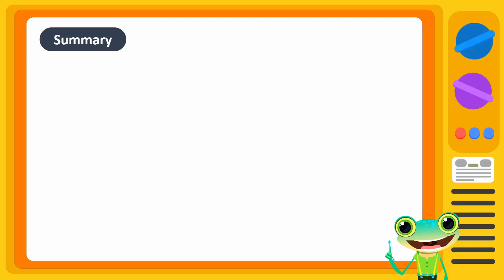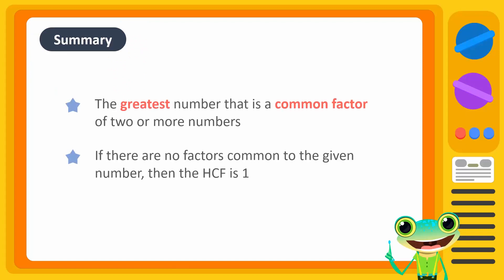In this video, we learned about the highest common factor. The largest common factor of two or more numbers is called the highest common factor, commonly referred to as HCF. If there are no factors common to the given numbers, then the highest common factor is 1, as it is a factor of every number.